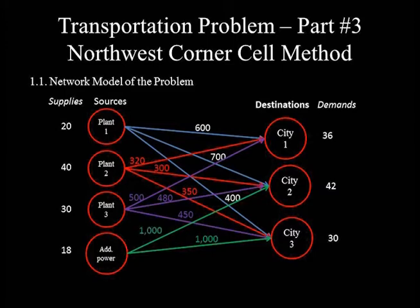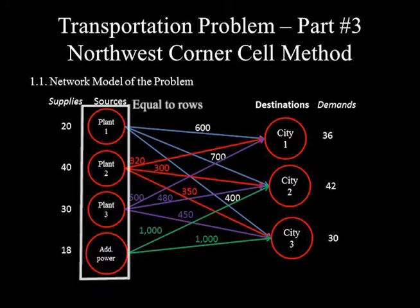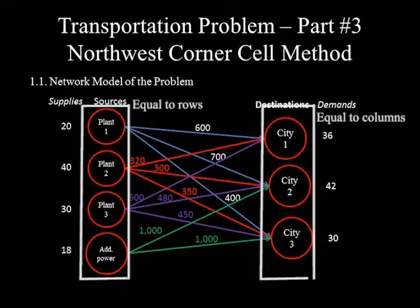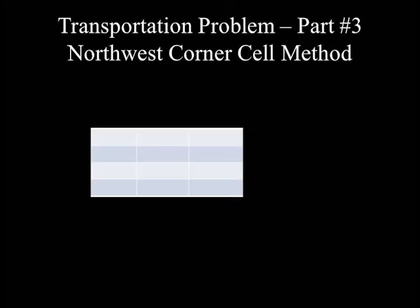This is the complete network model. The amount transported may be shown on each arc using a symbol such as x11 for the amount from plant one to city one. The other model to construct is a transportation table. In a transportation table, each source node is represented by a row and each destination node by a column. In this problem, we have four source nodes and three destination nodes, so we draw a table with four rows and three columns.